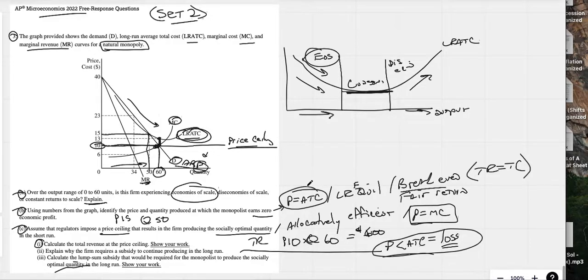They can charge $10 a unit because that's the price ceiling price. If they can charge $10 but their cost is $13, they're $3 short per unit. What we recognize is they're losing $180.